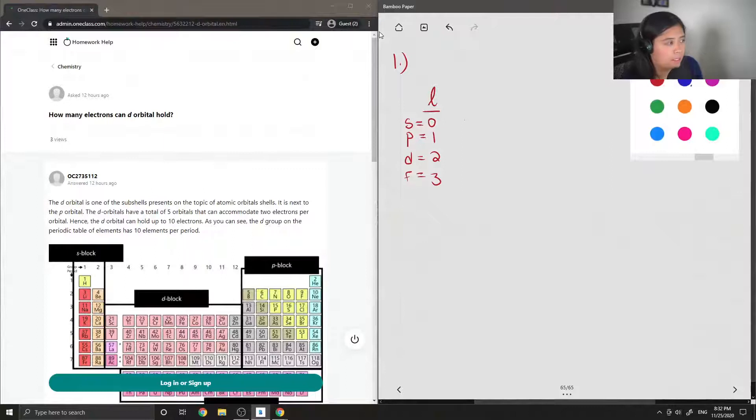So in the case of the d orbital, which I'll just box here, it will range from negative 2 all the way to positive 2.